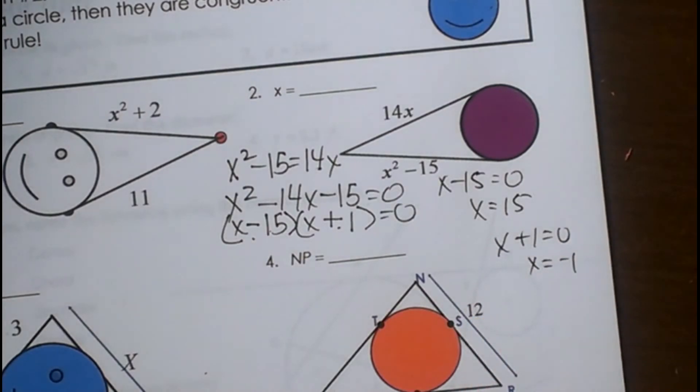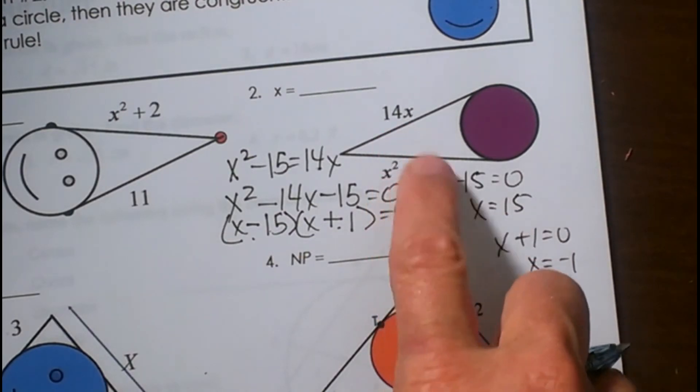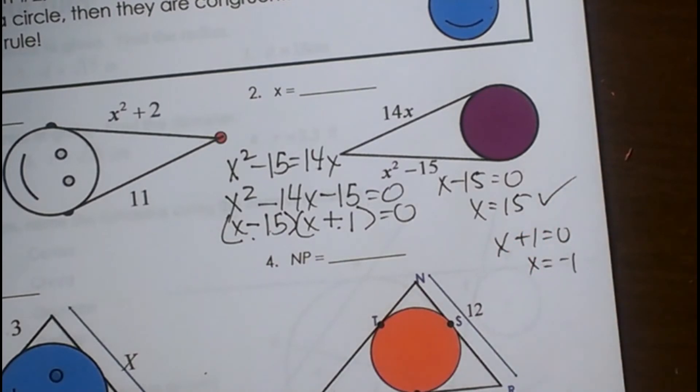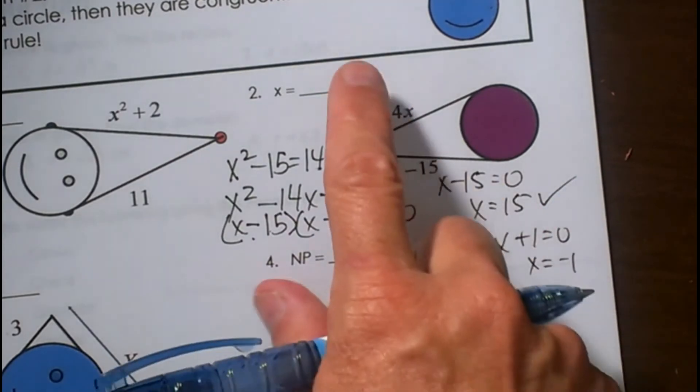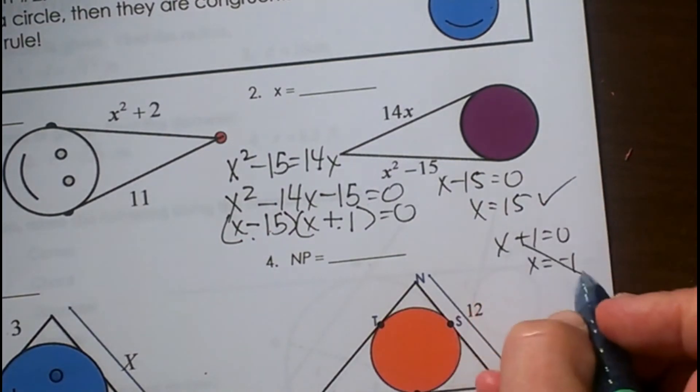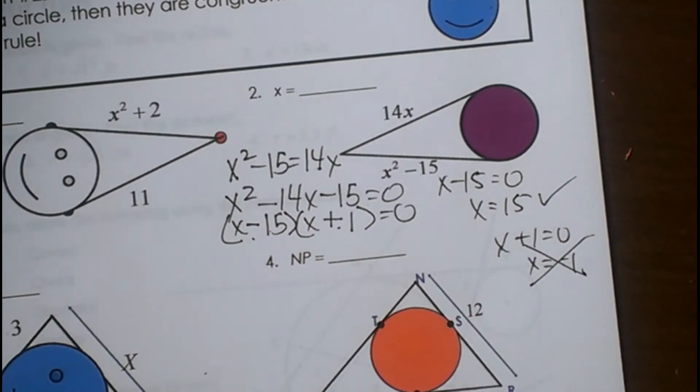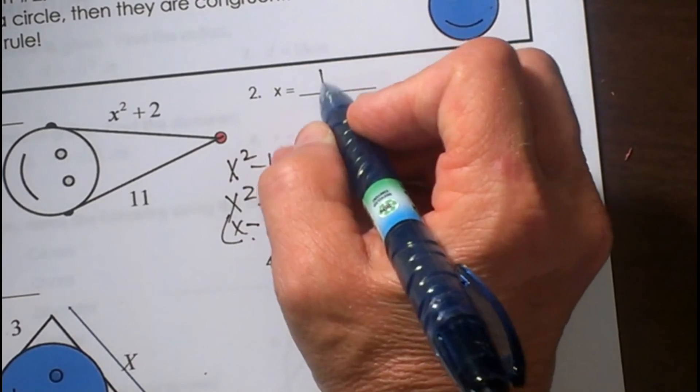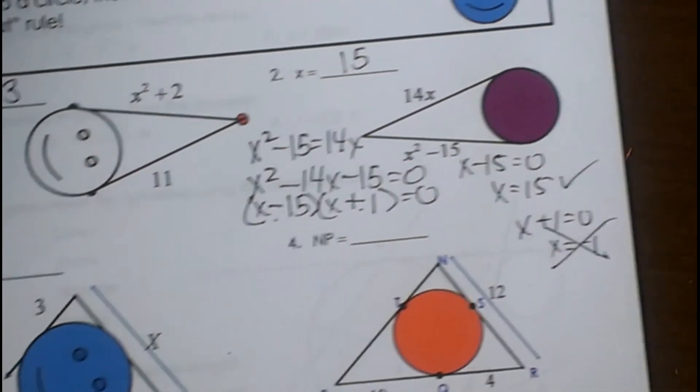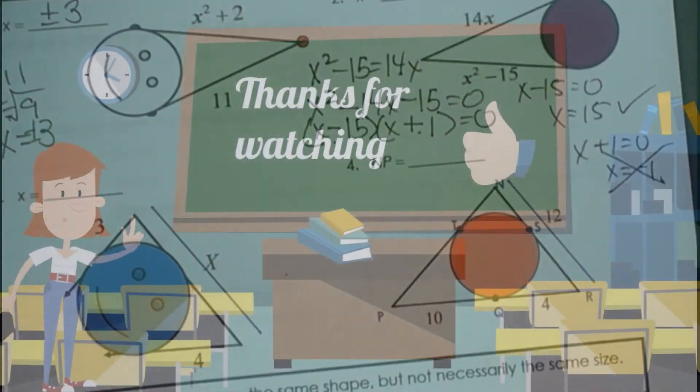Let's make sure those work. Okay, positive 15. If I plug a positive 15 in both spots, I get positive answers. So that's a good answer. Let's try plugging in the negative. If I plug a negative in here, I get a negative 14. I can't have a negative length, so I have to throw that answer out. So in this problem, I only have one solution, and the answer is 15. Okay, let's look at the next one.